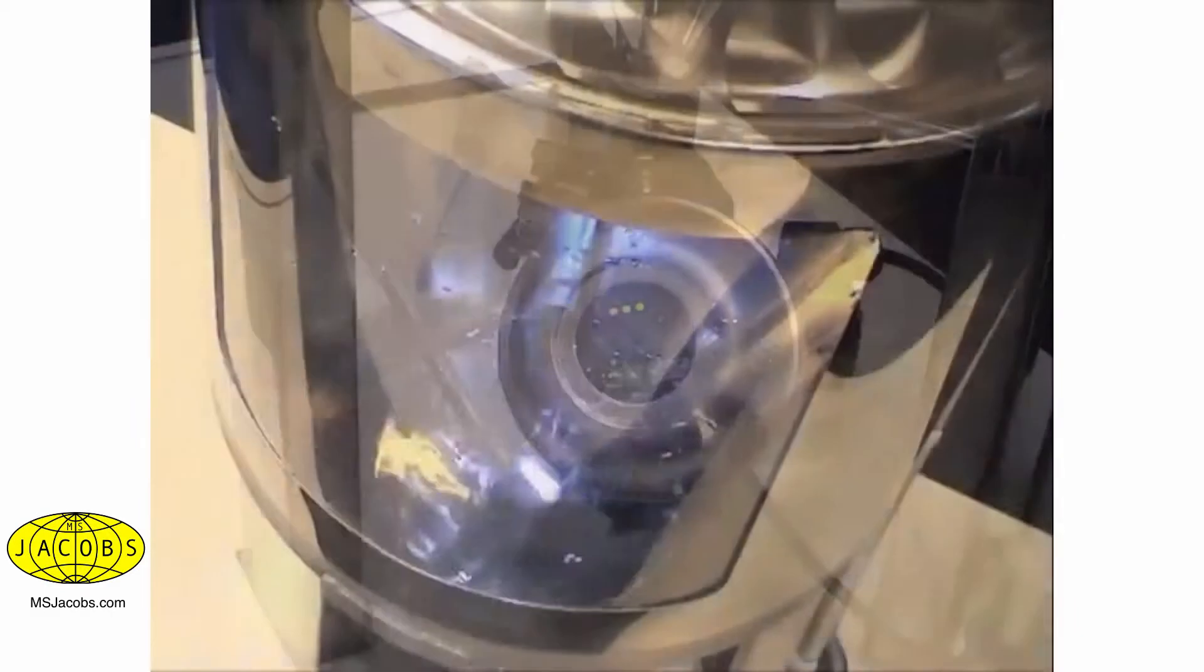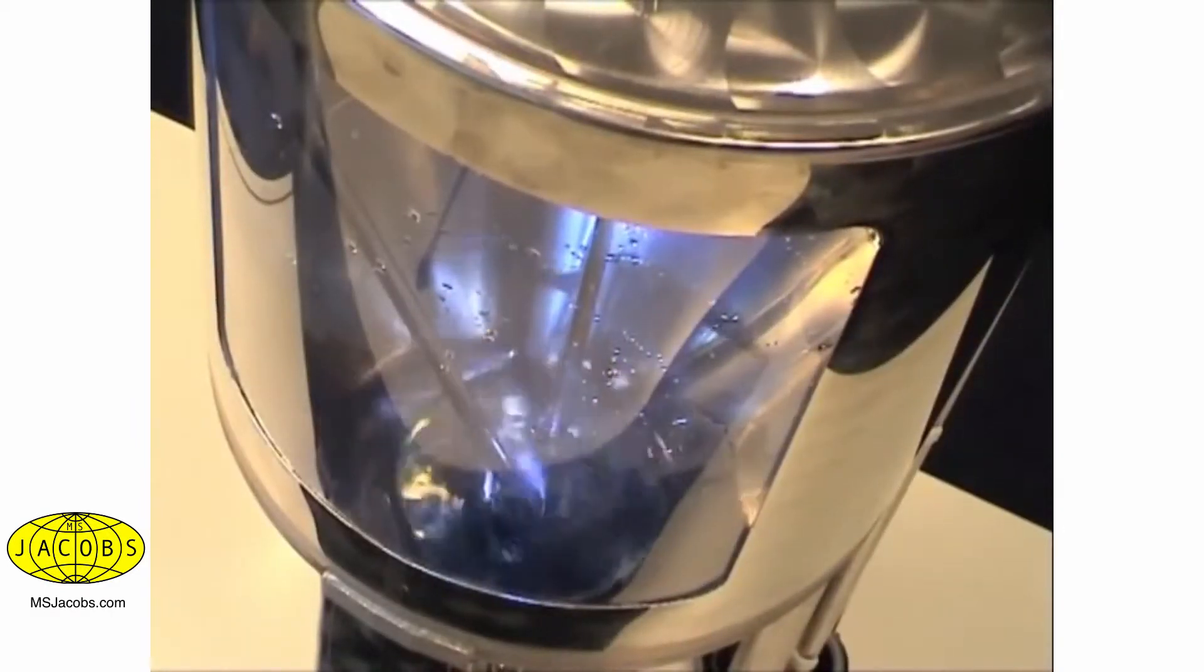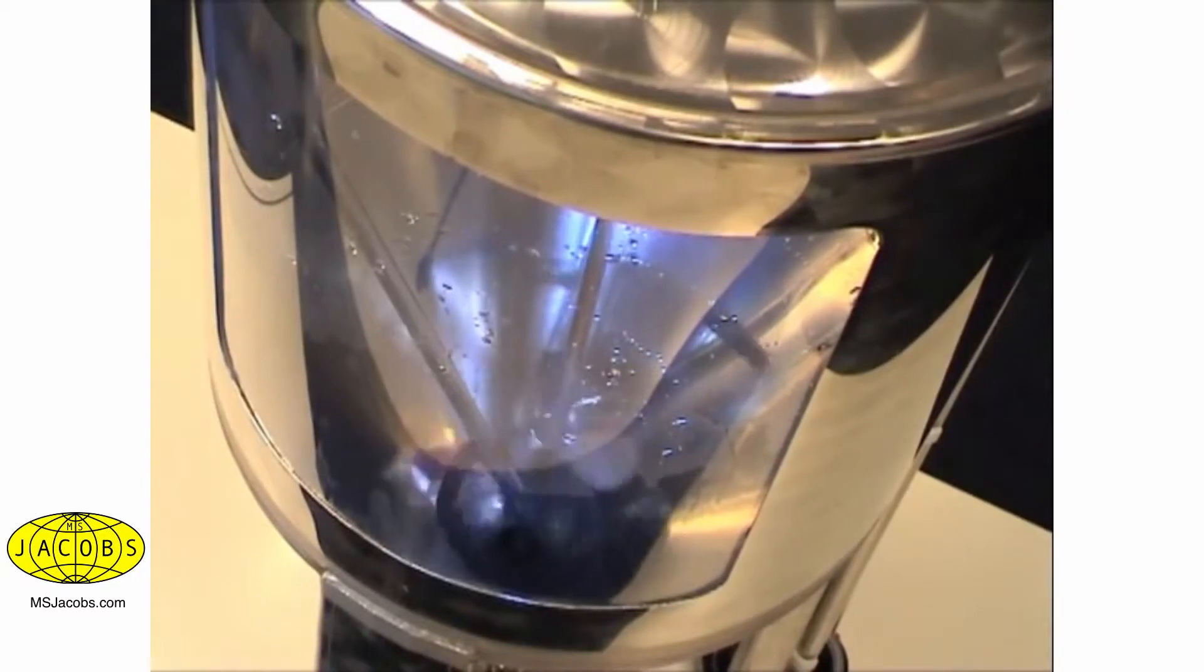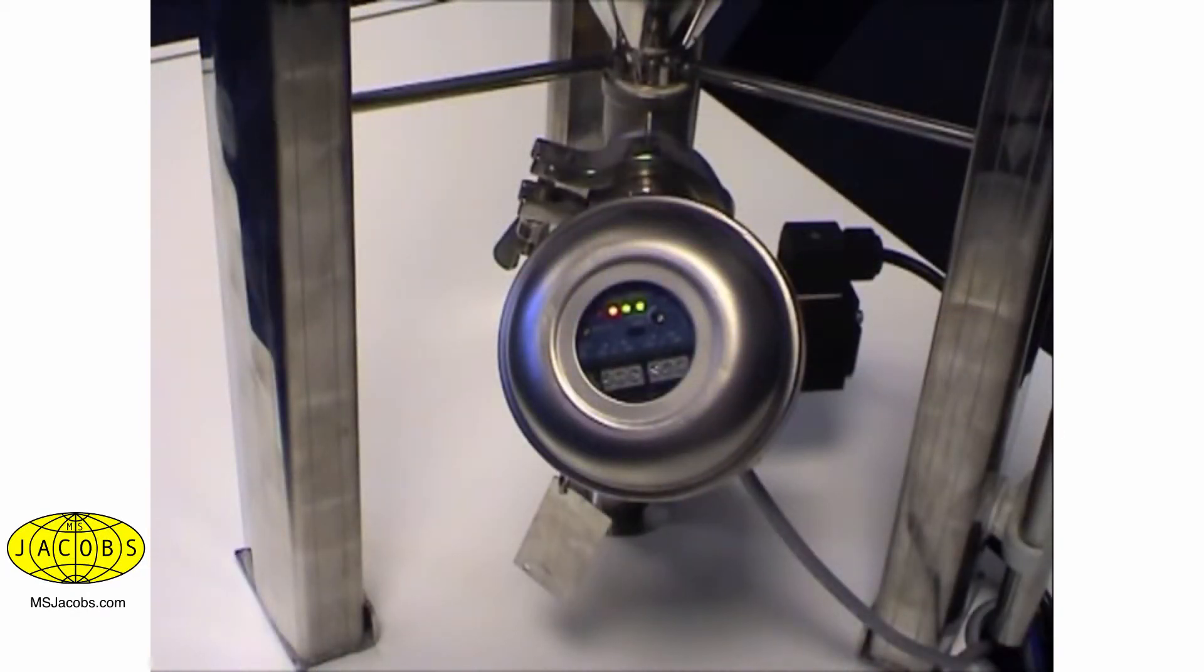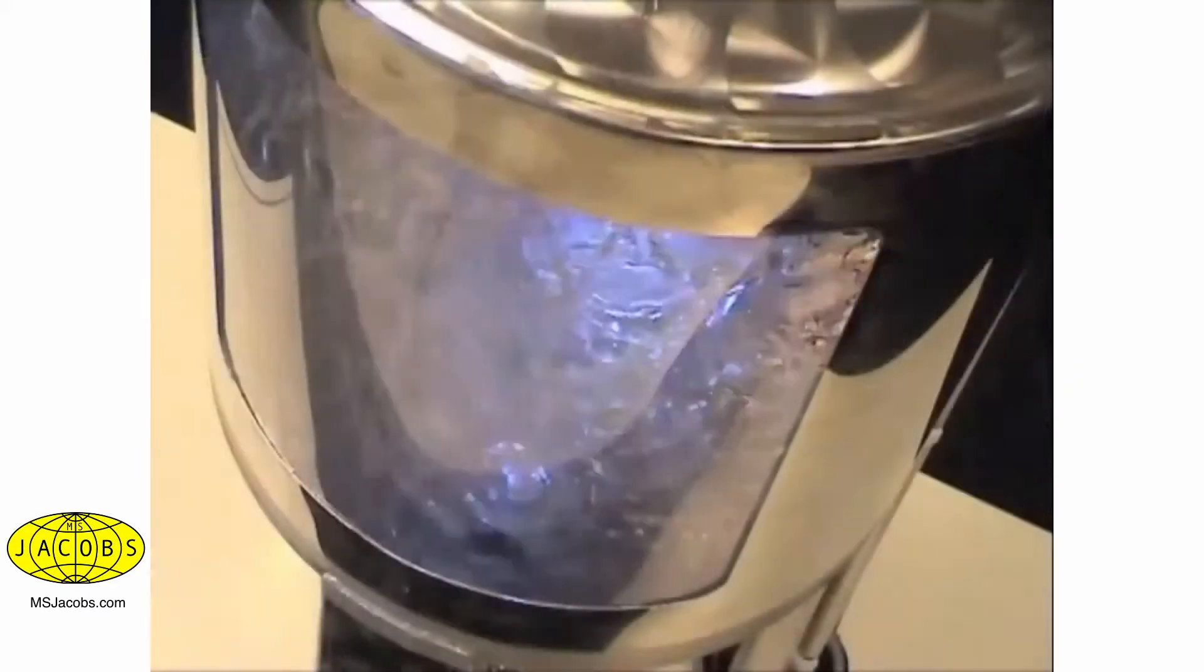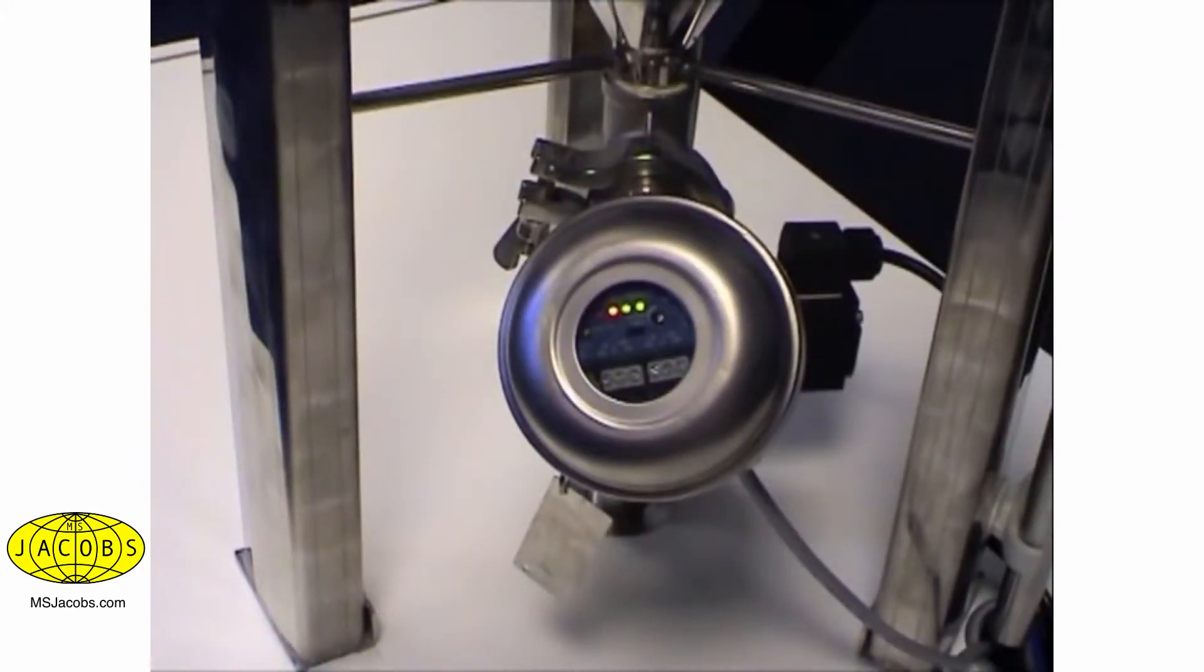The Thermotel switch installed at the bottom senses the presence or absence of liquid using thermal dispersion technology. In this particular installation, the Model TD2 is calibrated to detect low level for things like pump protection. The Thermotel TD2 can also be used to detect low or no flow in pipelines.